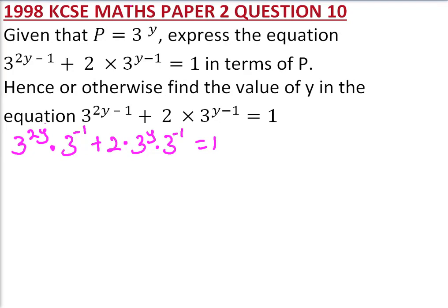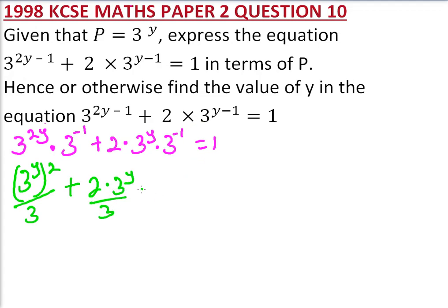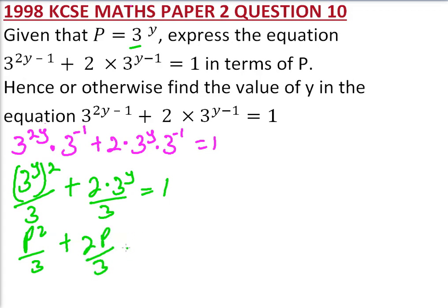We can now reorganize again our equation and say this is the same as 3 to the power 2Y divided by 3 — the minus sign indicates the inverse — plus 2 multiplied by 3 to the power Y divided by 3, equals 1. Now we can express our equation in terms of P, since we have managed to express 3Y. So this is P squared divided by 3, plus 2P divided by 3, equals 1.